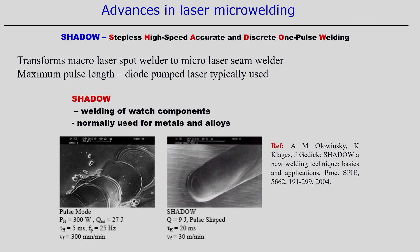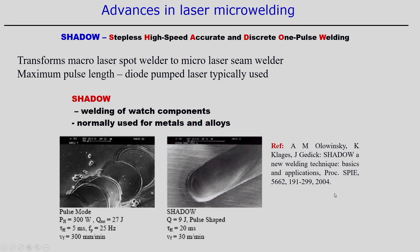In the SHADOW technique example shown, pulse energy Q equals 9 joules, pulse welding is used, pulse duration is 20 milliseconds, and the scan velocity VF is very high at 30 meters per minute. The surface appearance and the total length over which the laser energy is deposited looks very smooth compared to the earlier standard pulse welding. This is the SHADOW technique, normally used for metallic materials.